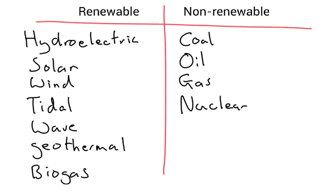Hydroelectric, solar, wind, tidal, wave, geothermal and biogas — they're all examples of renewable energy resources, whereas coal, oil, gas and nuclear are non-renewable energy resources.